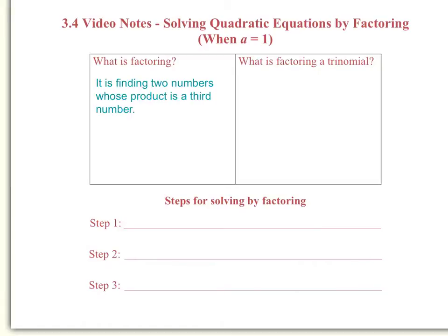What is factoring? It is finding two numbers whose product is a third number. For example, let's look at the factors of 20. The factors of 20 are two numbers whose product, meaning two numbers that you multiply together, will equal 20. Well we have 1 and 20, because 1 times 20 is 20. We have 2 times 10, and we also have 4 times 5.